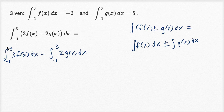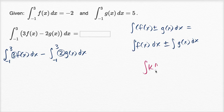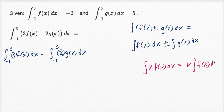Now the next thing we can do is take the scalars — we're multiplying the functions on the inside by three and two — and we can take those outside of the integral. That comes straight from the property that the integral of some constant times f of x dx is equal to the constant times the integral of f of x dx.